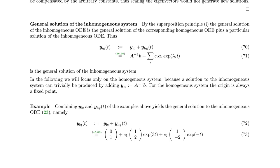The third step is to combine the particular solution of the inhomogeneous system with the general solution of the homogeneous one, generating the general solution of the inhomogeneous differential equation. In general, this is A-inverse B plus the combination of all homogeneous solutions, each with an arbitrary pre-factor Cᵢ. For our example: [0,1] + C₁·[1,2]·exp(3t) + C₂·[1,−2]·exp(−t).